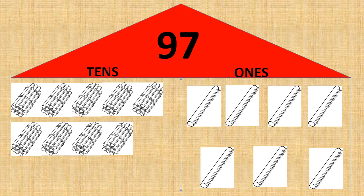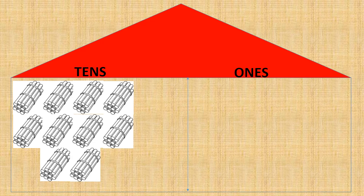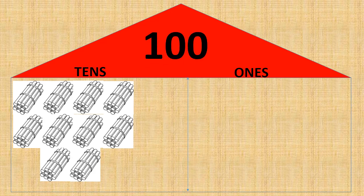Let's move further children. Now here we see one, two, three, four, five, six, seven, eight, nine, ten — ten bundles of tens. That means we have ten tens. And we have nothing in ones place. So ten tens gives us the number hundred.